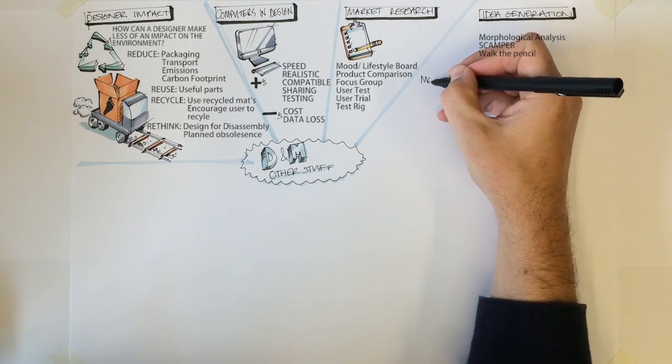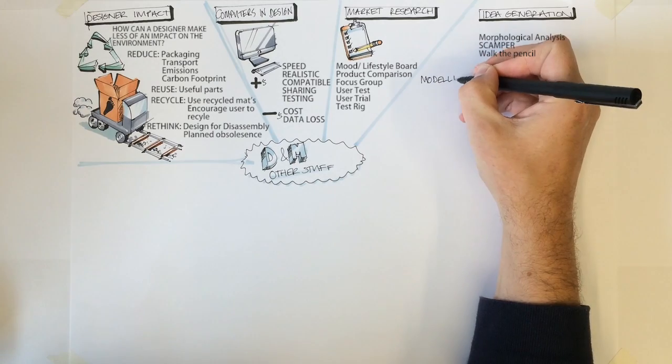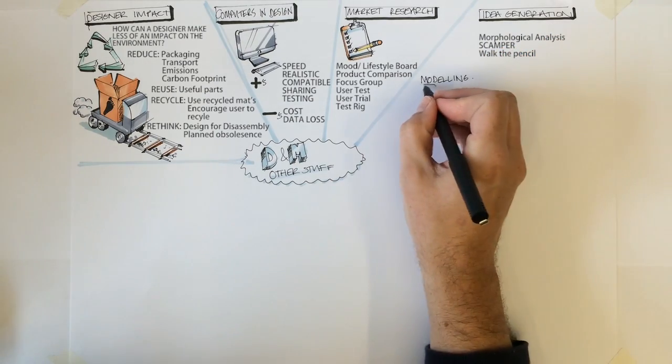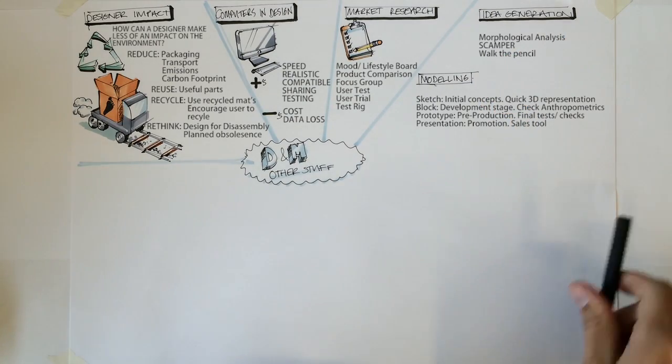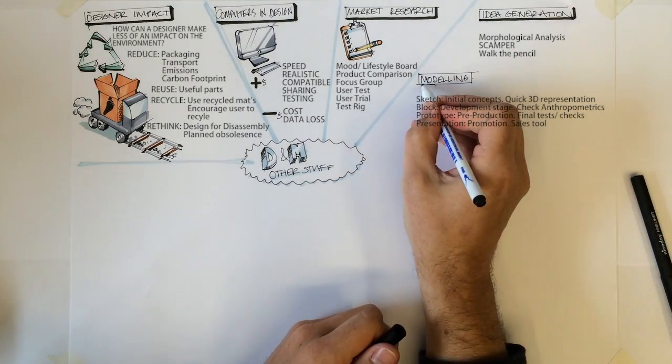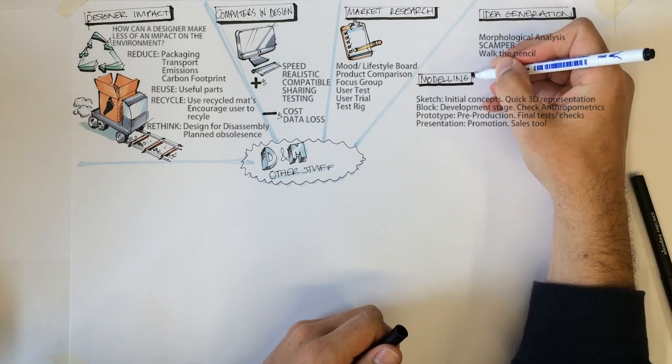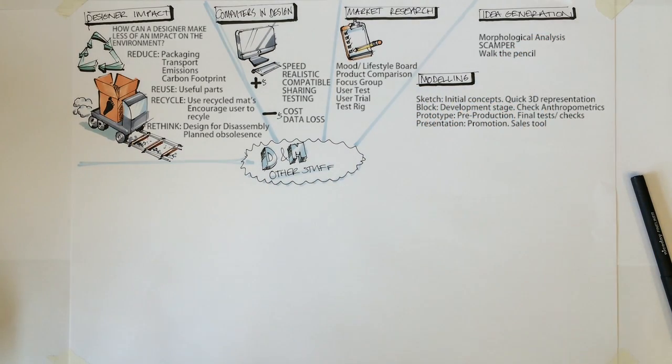Modelling. You will need to know what types of model a designer uses and when they will be likely to use them. Sketch models. Quick models made during the initial concept stage. These give the designer a quick idea of how the design looks and can be used as a talking point between colleagues.